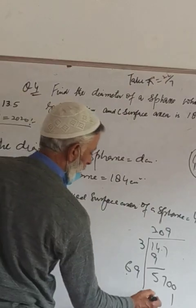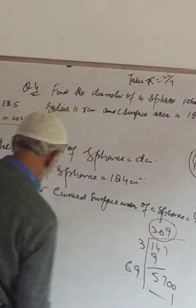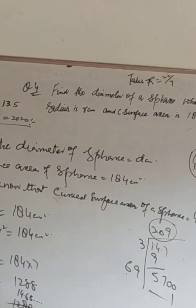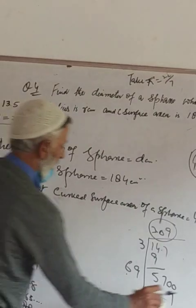It will be approximately 3.09, so R is equal to the square root of 3.09. The square root cancels, giving radius equal to 3.09 centimeters.